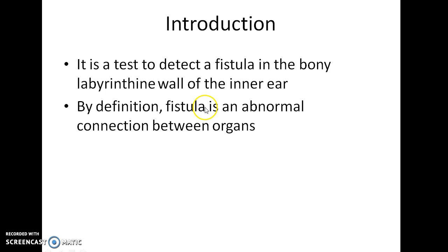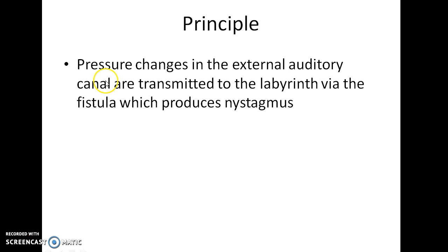By definition, a fistula is an abnormal connection between organs. What is the principle of this test? Pressure changes in the external auditory canal are transmitted to the labyrinth via the fistula, which then produces nystagmus.